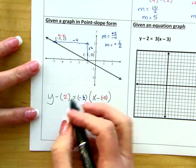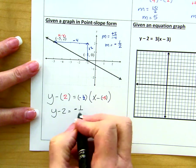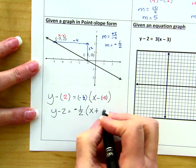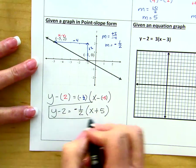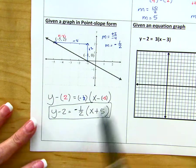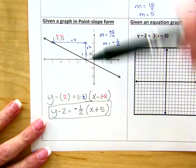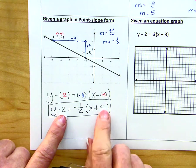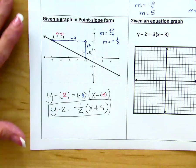Now I simplify. y minus 2 equals negative 1 half. And subtracting a negative is the same as adding a positive. So here we have, from a graph where we can see two points and count out the slope, the equation of this line written in point slope form. Where we have a point here of negative 5, and a point here of positive 2, and our slope of negative 1 half.